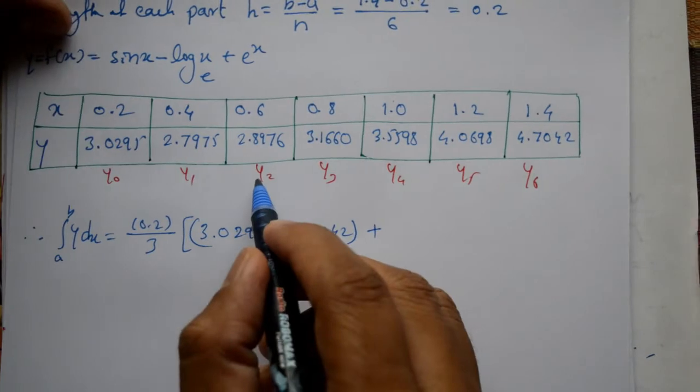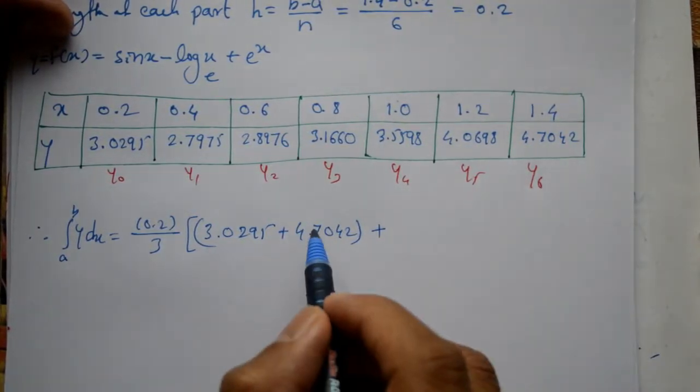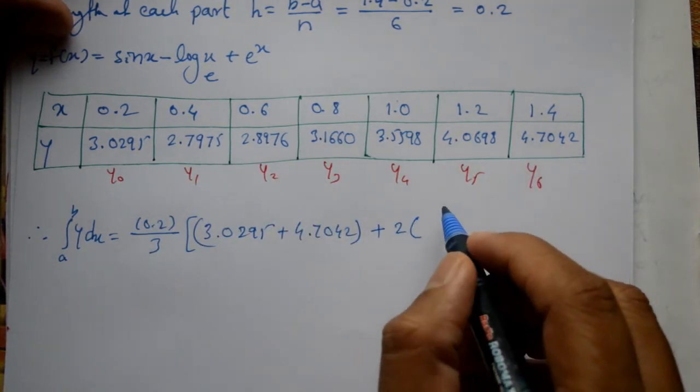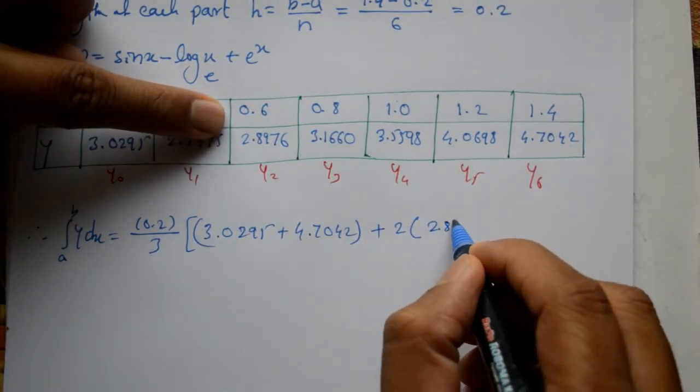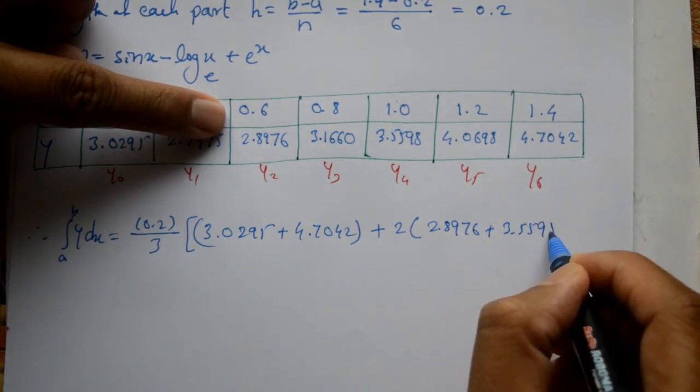Plus 2 into even numbers: y2 and y4. Don't take y6, don't repeat the value already taken. 2 into even numbers: 2.8976 plus 3.5598.